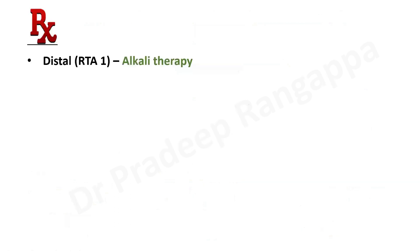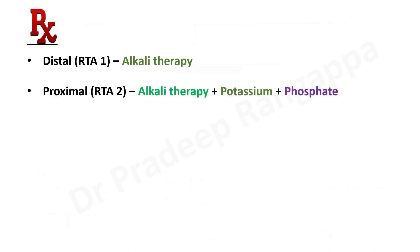Regarding treatment — no rocket science here. For distal RTA, give alkali therapy which is bicarbonate. For proximal RTA, because there is a lot of potassium and phosphate loss, you need to give bicarbonate along with potassium and phosphate supplementation.